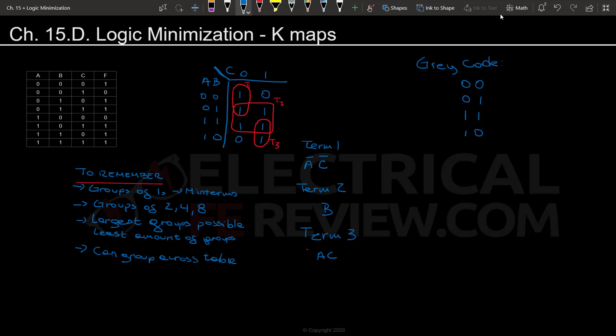So now that we have all the terms, we're going to do the same thing that we did last couple of times. And we're going to say that F, the function that has this desired outcome, is going to equal the sum connection with an or gate of all of these terms. So it's going to be A naught C naught or B or AC.